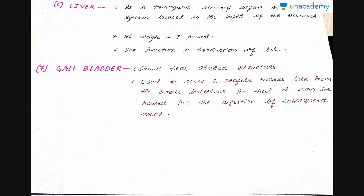Moving forward to the gallbladder — it is a small pear-shaped structure used to store and recycle the excess bile from the small intestine, so that it can be reused for the digestion of subsequent meals.